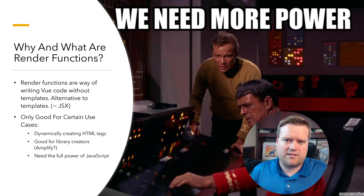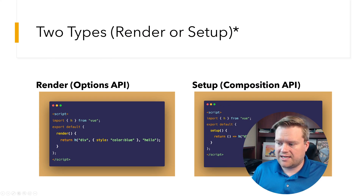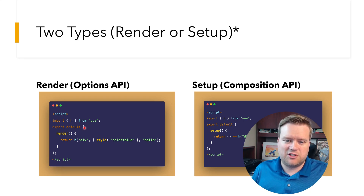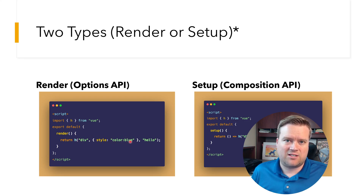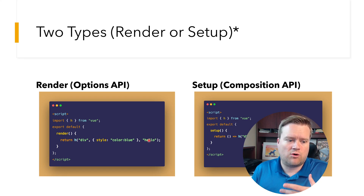Render functions are really good for library creators and when you need the full power of JavaScript. You'll see this pattern when you're getting into more complicated apps and templates just aren't as powerful as you want them to be. There are really two types of render functions. On the left-hand side you have the Options API style — it has a render function with a return statement. The first value is the tag name, the second is any attributes or elements, and the third is the content between the opening and closing brackets.